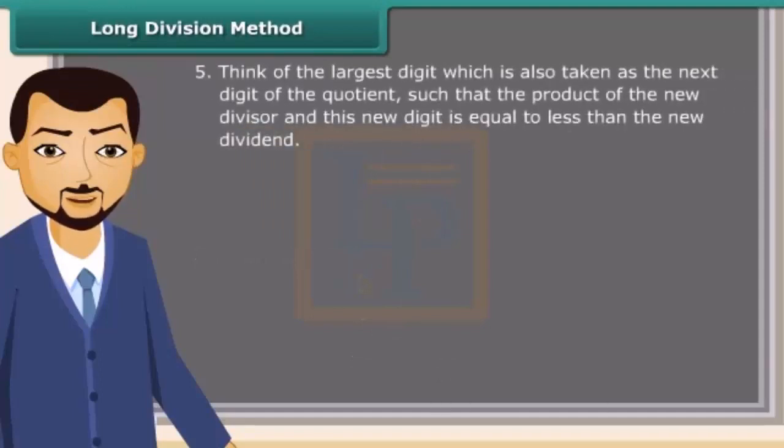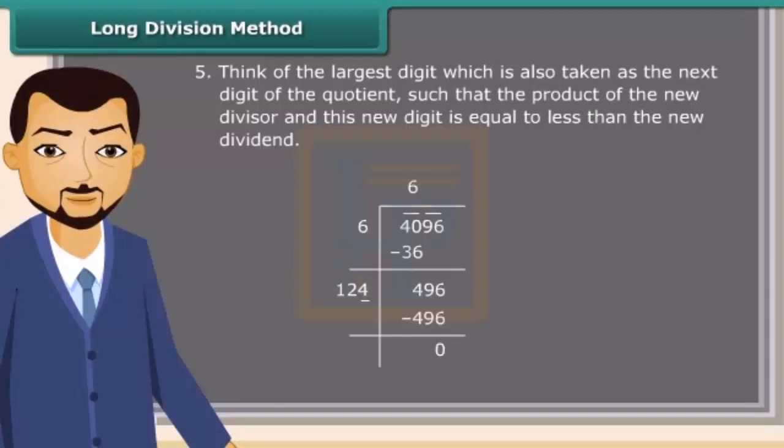Next, think of the largest digit which is also taken as the next digit of the quotient, such that the product of the new divisor and this new digit is equal to or less than the new dividend. Here we have 124 multiplied by 4 equal to 496. Since the remainder is 0, the square root of 4096 is 64.